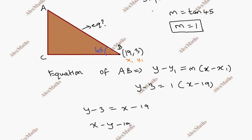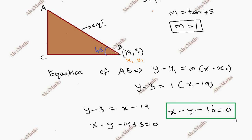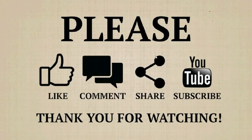Now y minus 3 equals x minus 19. Rearranging: x minus y minus 19 plus 3 equals 0, which gives x minus y minus 16 equals 0. So this is the equation of the hill joining the foot and the top.